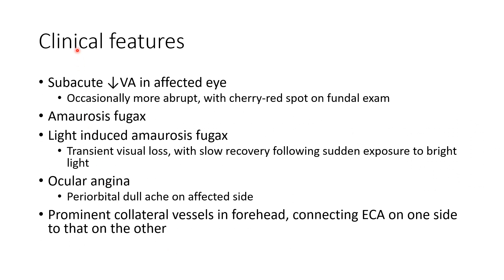Coming to the clinical features of ocular ischemic syndrome, there can be subacute diminution of vision in the affected eye. Occasionally, the diminution of vision will be more abrupt with a relative afferent pupillary defect on examination. There can be amaurosis fugax, including light-induced amaurosis fugax, which is transient visual loss with slow recovery following sudden exposure to bright light. There can be ocular angina, that is periorbital dull ache on the affected side. There can be prominent collateral vessels in the forehead connecting the external carotid artery on one side to that on the other.